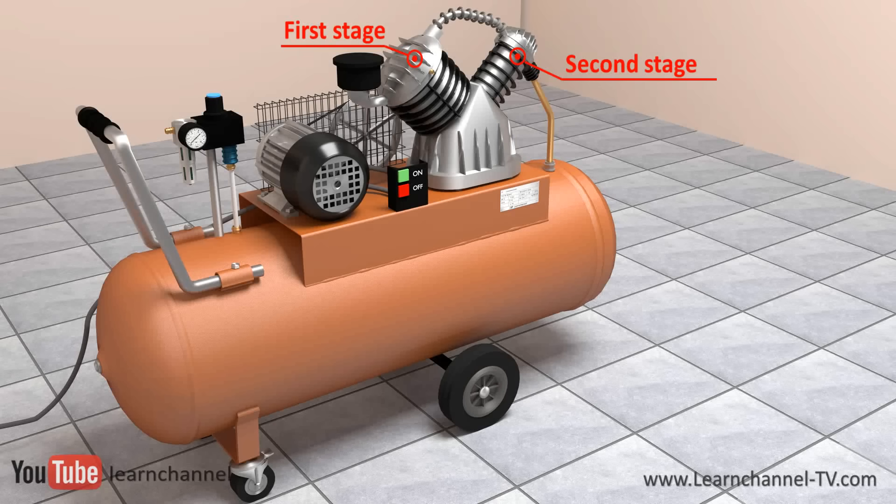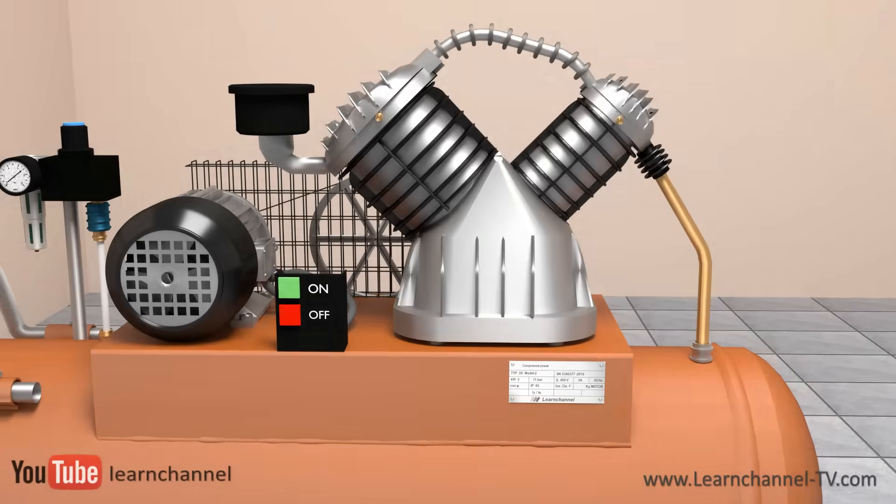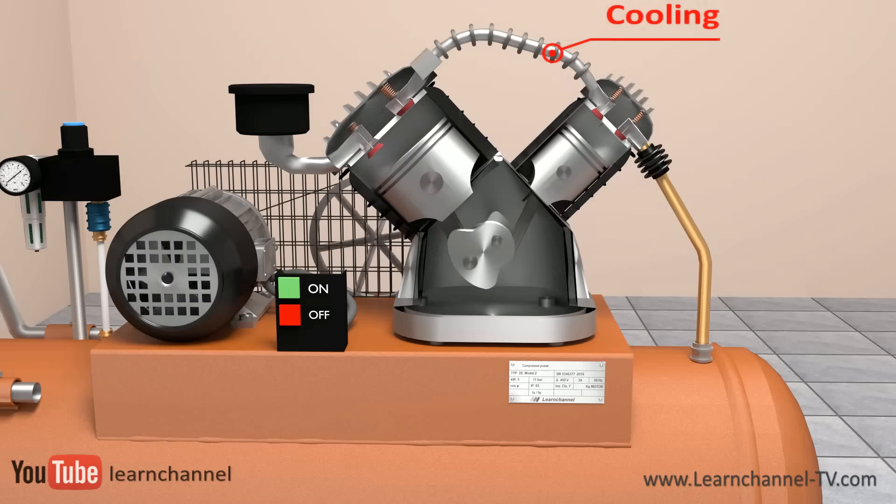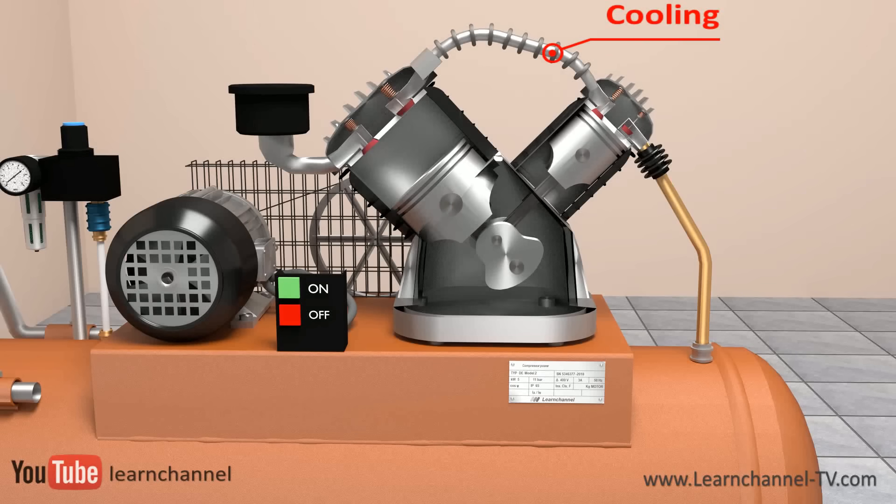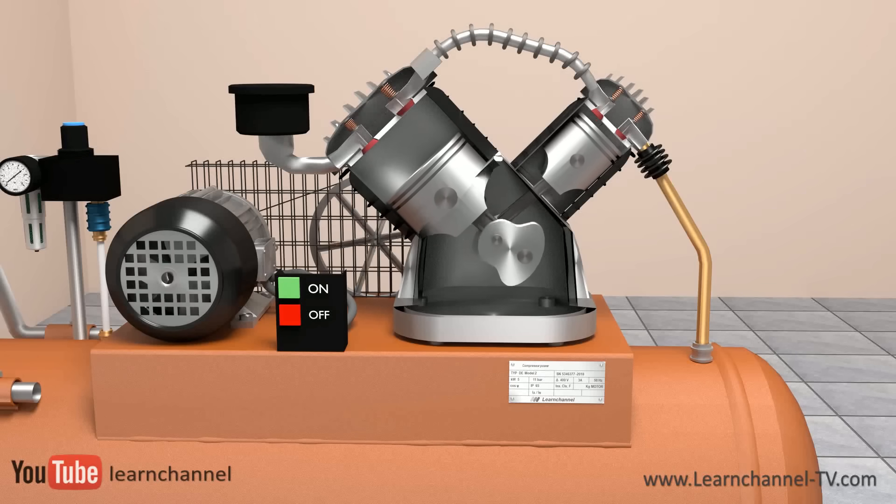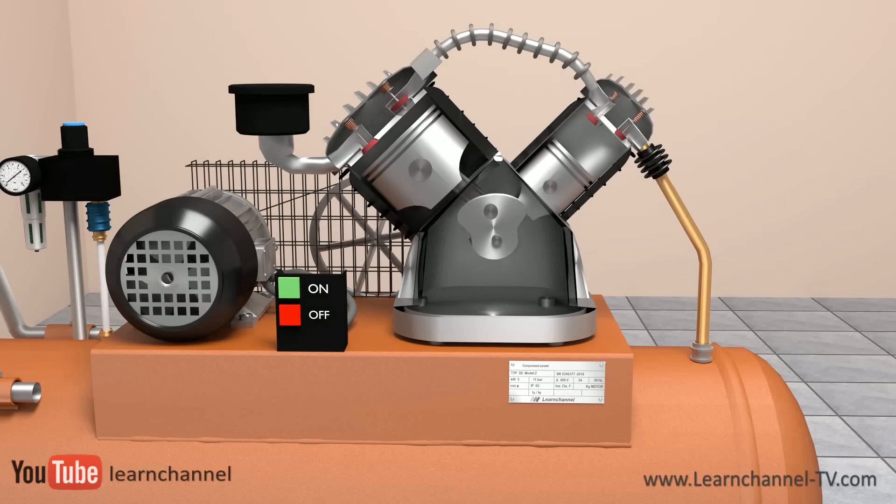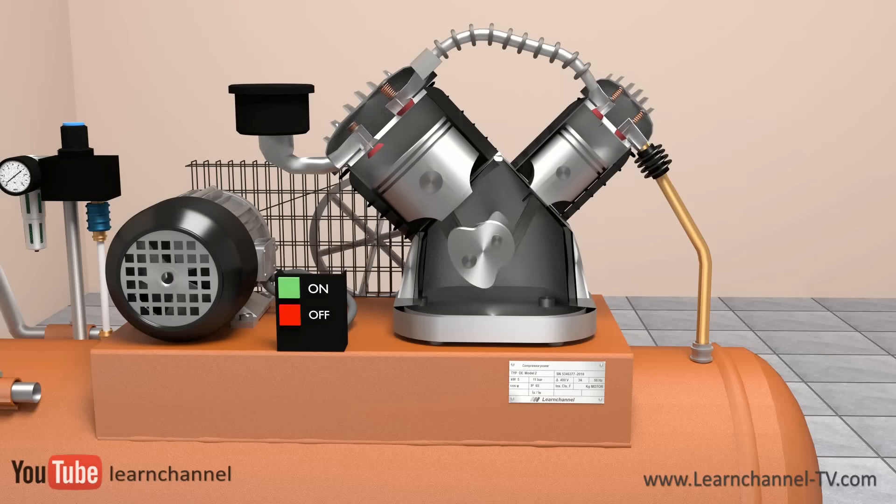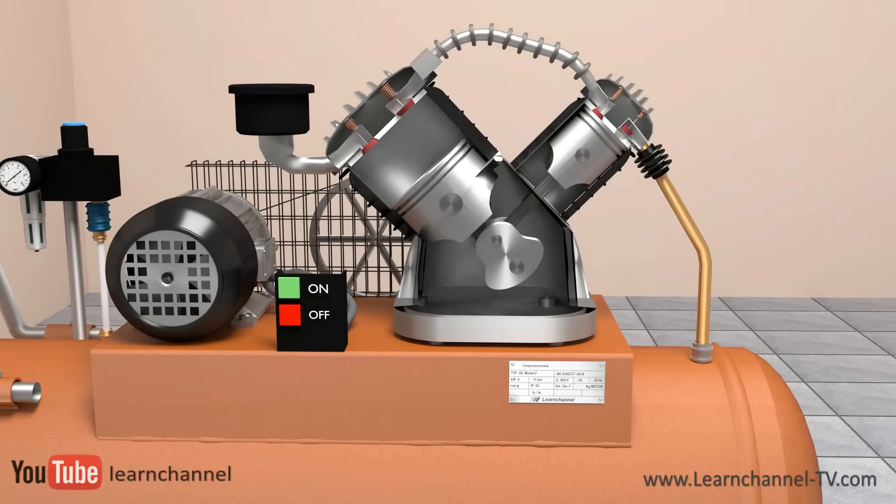To achieve higher pressures, you would use a multi-step compressor. Here, a two-stage compressor is shown. The large piston builds the first stage. The air leaving the first stage can now be cooled before it enters into the second stage. With a two-stage compressor, you achieve pressures over 20 bars, or 290 psi.